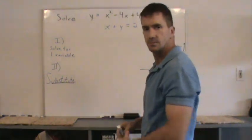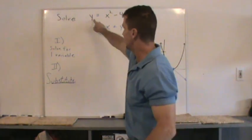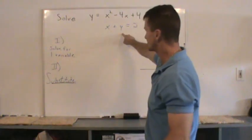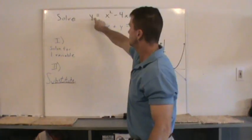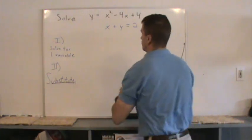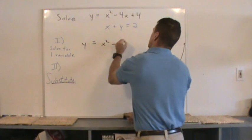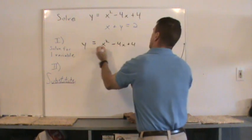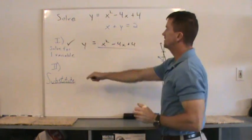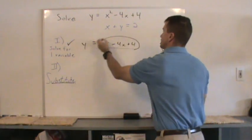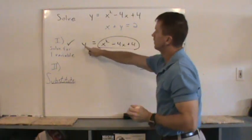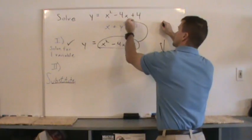It's already solved for y, right? Sure you could solve for x or y here. It's already solved there. Solve one variable. Y equals x squared minus 4x plus 4. Check that out. Now I'll take this and substitute it into the other equation where y is located. That's right there.